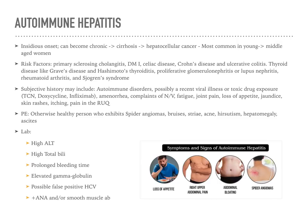Autoimmune hepatitis can have an insidious onset and become chronic. Patients at risk include those with celiac disease, Crohn's disease, thyroid issues such as Graves' disease or Hashimoto's thyroiditis. In the subjective history, the patient may have had recent viral illnesses or toxic drug exposures, and may complain of nausea, vomiting, joint pain, loss of appetite, and jaundice. On physical exam, they may be otherwise healthy but exhibit spider angiomas, bruising, striae, acne, hirsutism, hepatomegaly, and ascites. Lab studies show elevated bilirubin, prolonged bleeding times, elevated GGT, and transaminitis.